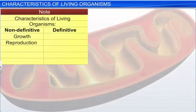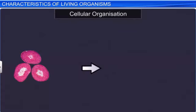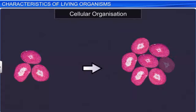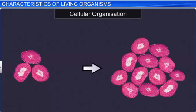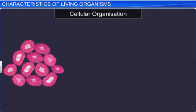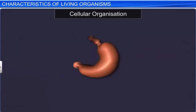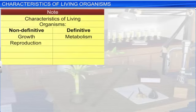We can therefore state that metabolism is a definitive feature of living organisms. Cellular organization is another important characteristic of living organisms; such organization is not observed in the non-living. And hence, cellular organization is also a definitive feature in all life forms.